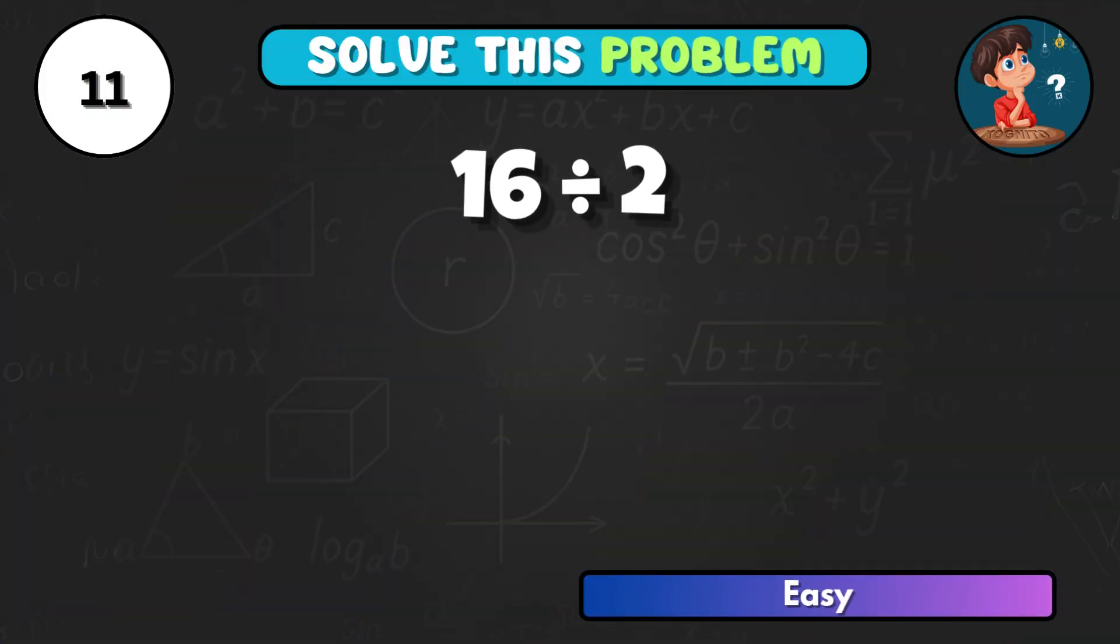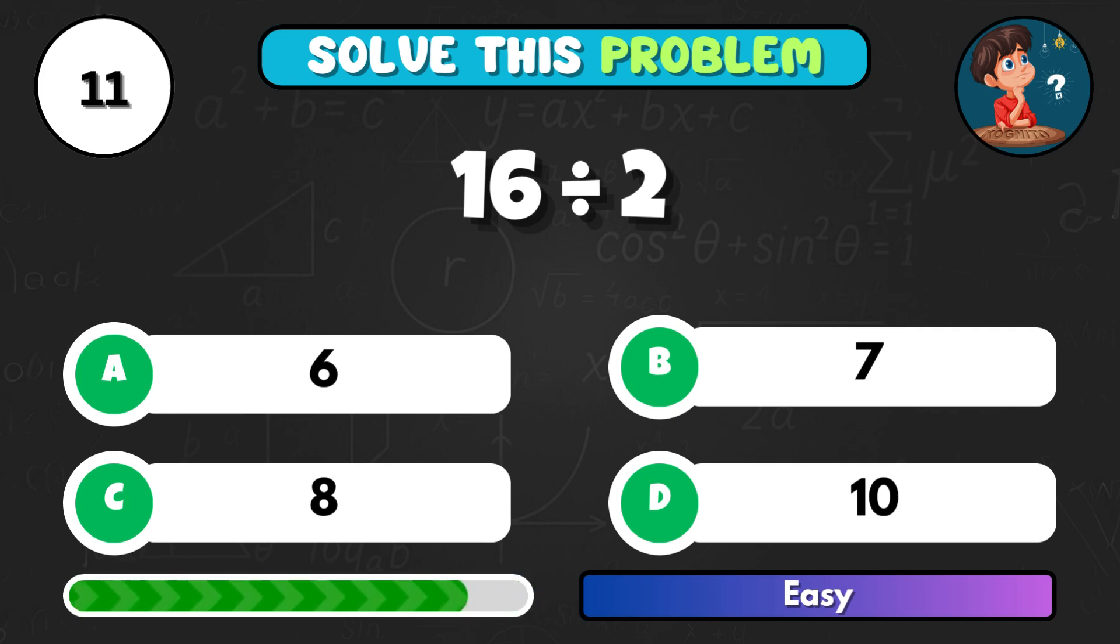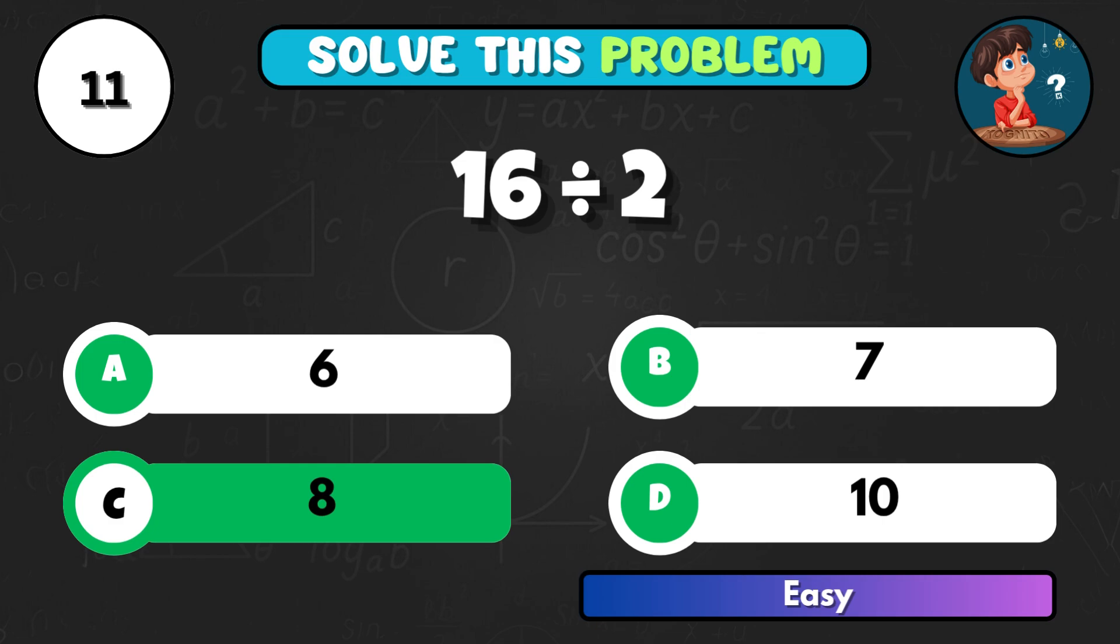16 divided by 2, what's the outcome? Correct choice C, and that's 8.